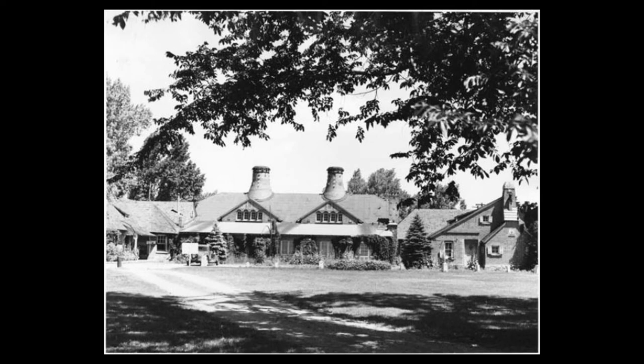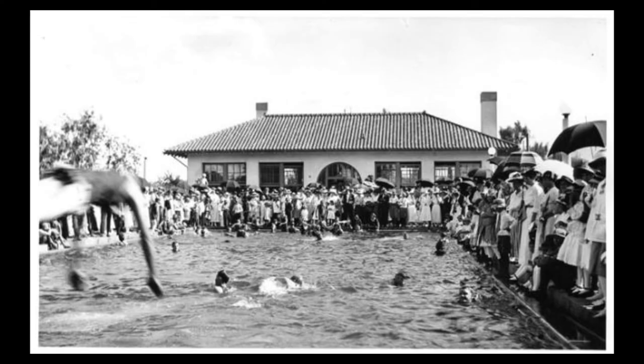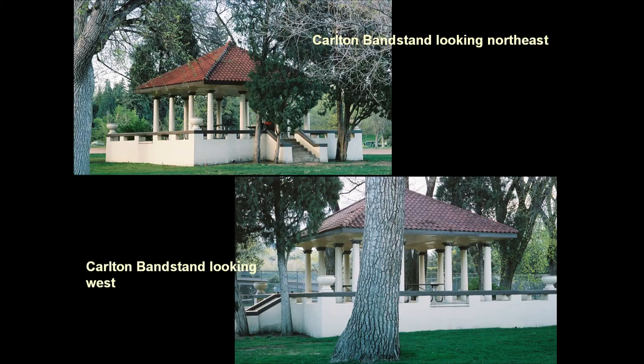These wonderful pavilions — two of them in the park — were designed by Thomas McLaren, Colorado Springs' leading architect, so they're significant for that reason, and plus they're quite beautiful. The first public pool in Colorado Springs was donated by the Penroses and was open before 1920. It's been closed for several years unfortunately, and it's one of only two or maybe three outdoor pools in the city. You can see Pikes Peak and the mountains from the pool — it's really quite wonderful.